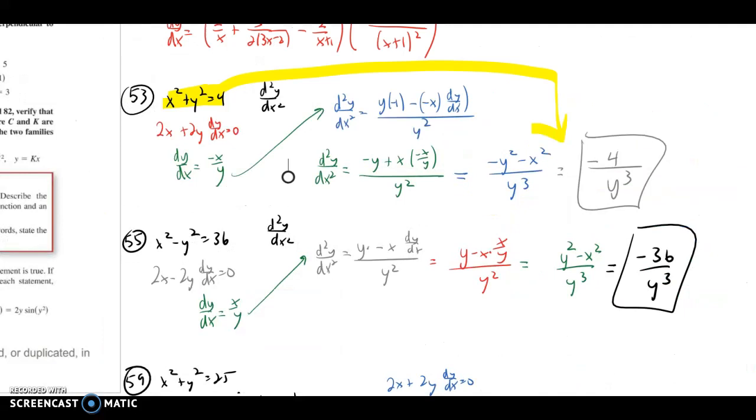In problem number 53, we're asked to find the second derivative. So black to red, I found the first derivative. Solved for dy/dx. Then I'm taking the second derivative of this. So the derivative of the left with respect to x gives us d squared y over dx squared. So the derivative of both sides with respect to x. The right side, we have to use the quotient rule. And from blue to green, the big difference is I simplified that. Negative, negative makes it a positive. But the dy/dx, I made a substitution. Negative x over y is what dy/dx is equal to. So we plug that in.